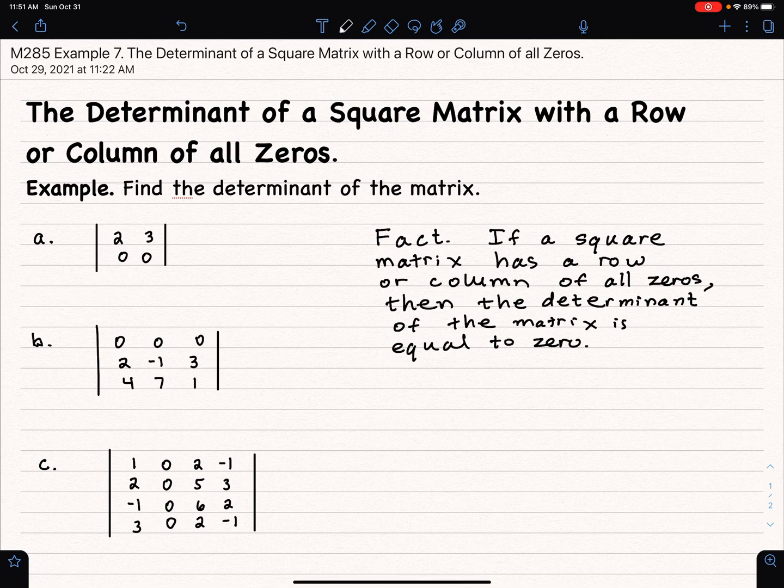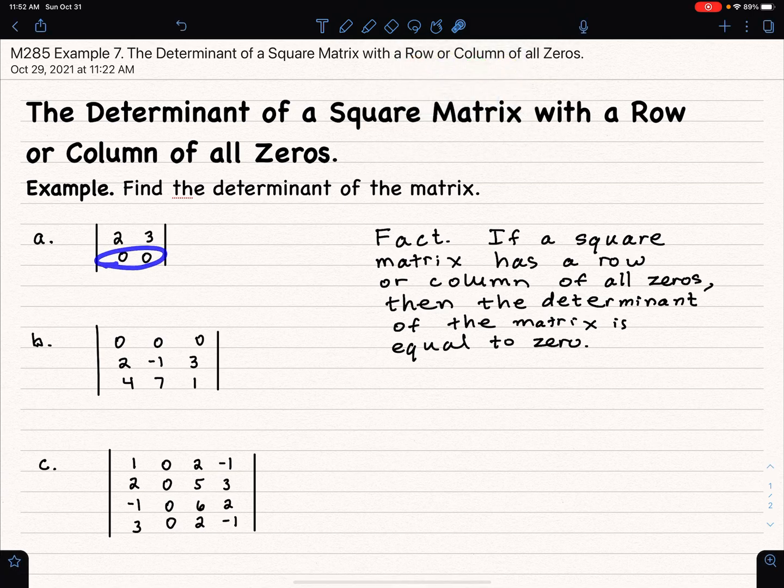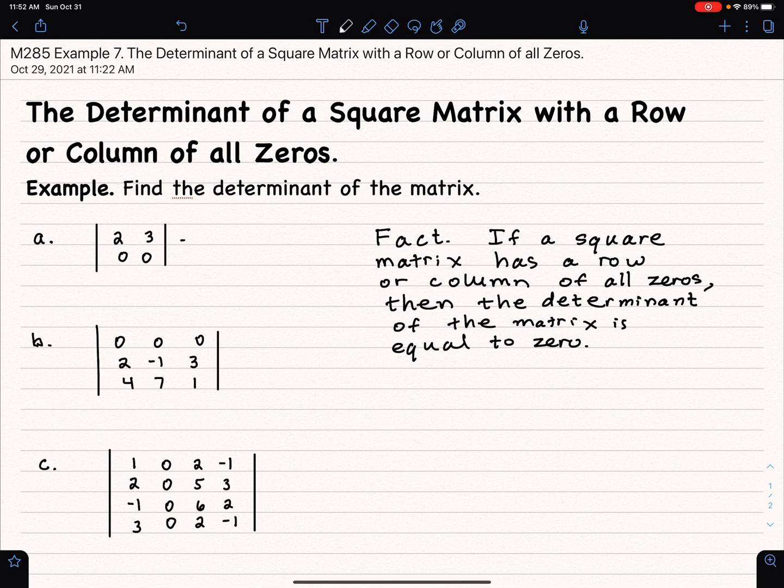So if it has at least one row or a column of all zeros, then its determinant is zero. It could have more - could have two rows that are all zeros or a row and a column zero, and it'll be zero anyway. So if you just see something with all zeros along any row or column, what do you get for the determinant? Zero.